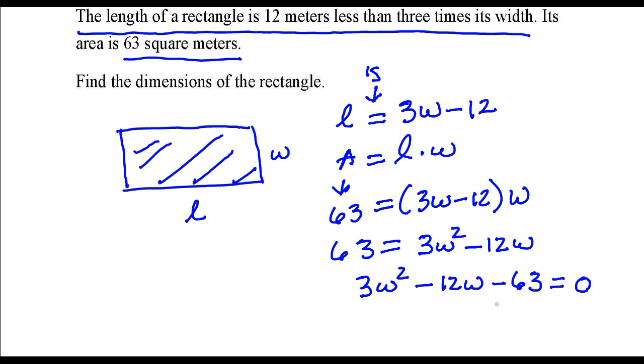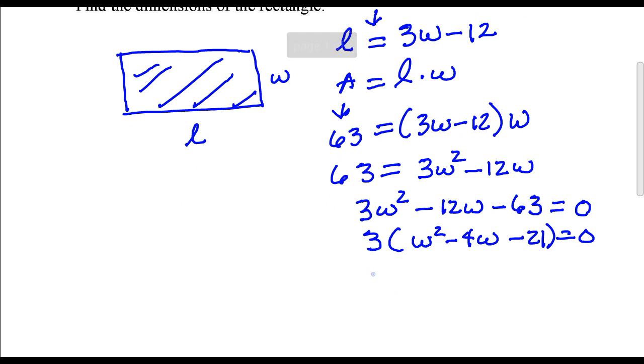Okay, so to solve this quadratic equation, I want to factor this. It's easier if you factor a 3 out of each term. And then we'll write this quadratic expression as a product of two binomials. So I'm looking for two numbers multiplied together that's negative 21, but when you add those two numbers together it's negative 4.